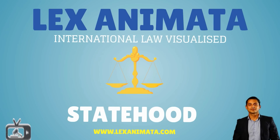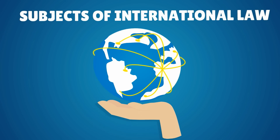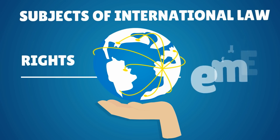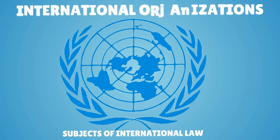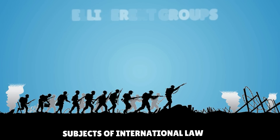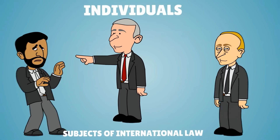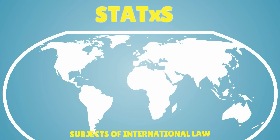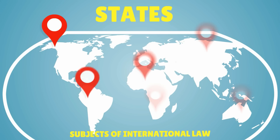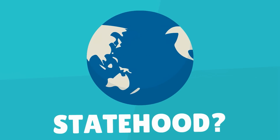Statehood and international law visualized. Subjects of international law are entities capable of possessing international rights and duties, like international organizations, multinational enterprises, belligerent groups, non-governmental institutions, individuals, and states. States in particular retain a special importance in the global legal system as the main subject of the international community. In order for an entity to be called a state, it should meet five conditions.